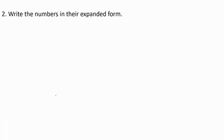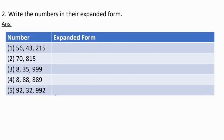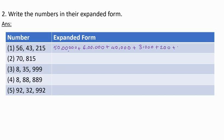Next question: Write the numbers in the expanded form. First number: 56,43,215. The answer is 50 lakh plus 6 lakh plus 40,000 plus 3,000 plus 200 plus 10 plus 5.